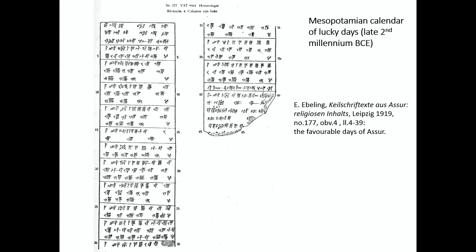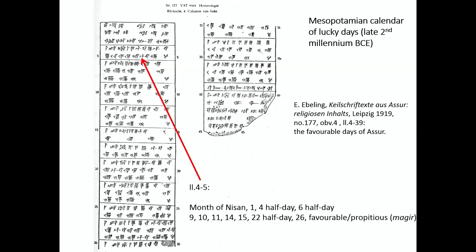Moving over now to Mesopotamia, here we have something like a calendar known as a calendar of lucky days. Also neatly structured, there is a box for every month. But in each of these boxes you don't have a full listing of the days of the month, only of the favourable propitious days. So for example, month of Nissan: day one, day four — that's only half a day, which presumably means the other half is not so good — six, nine, ten and so on. You don't have a full calendar of the year, but at least you have a representation of some of the significant days of the year.